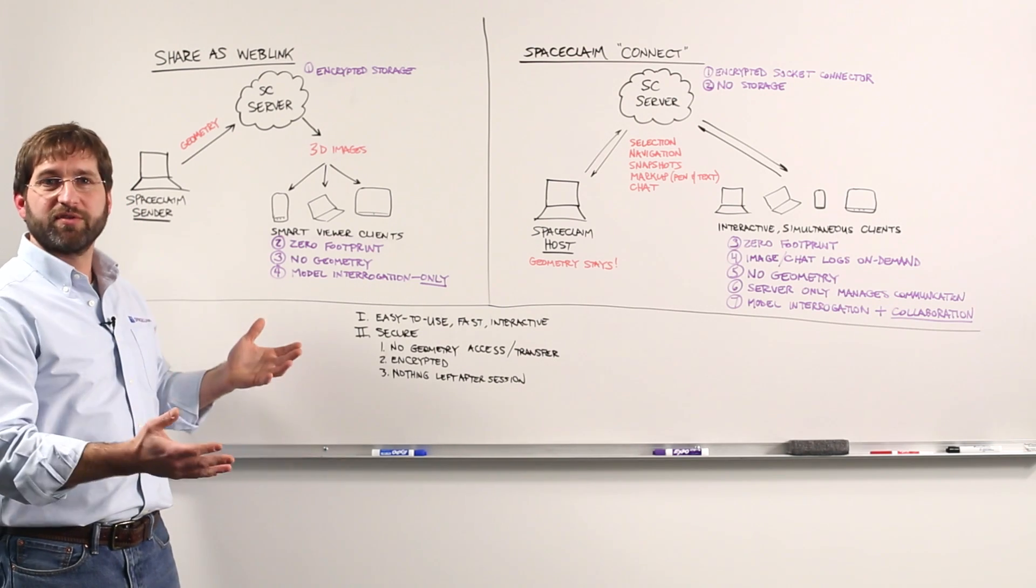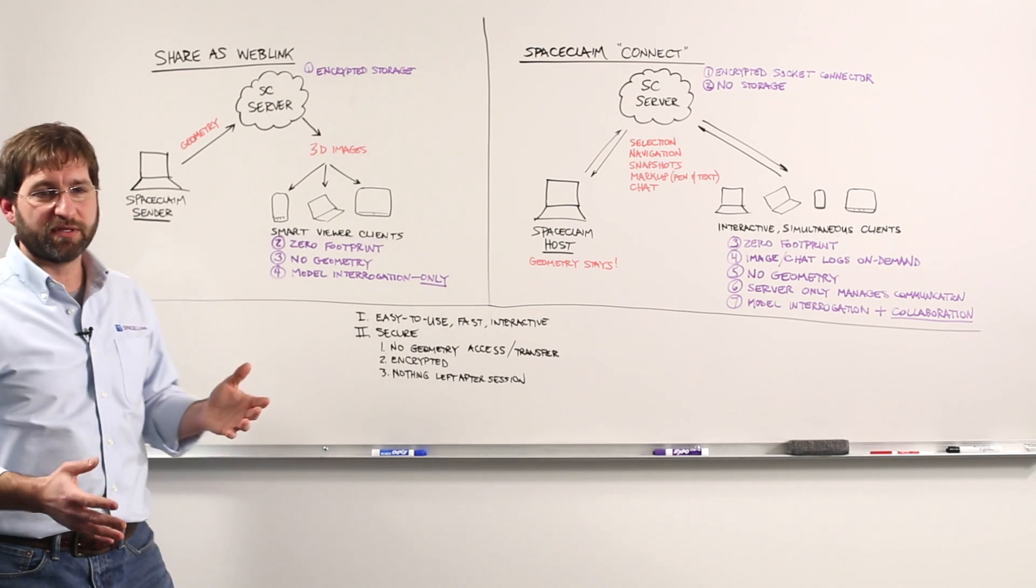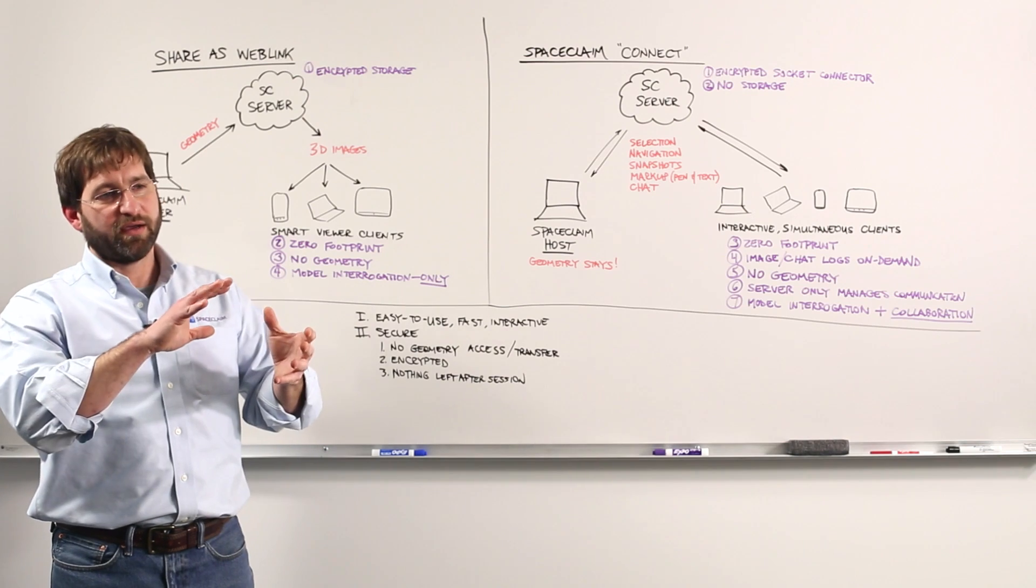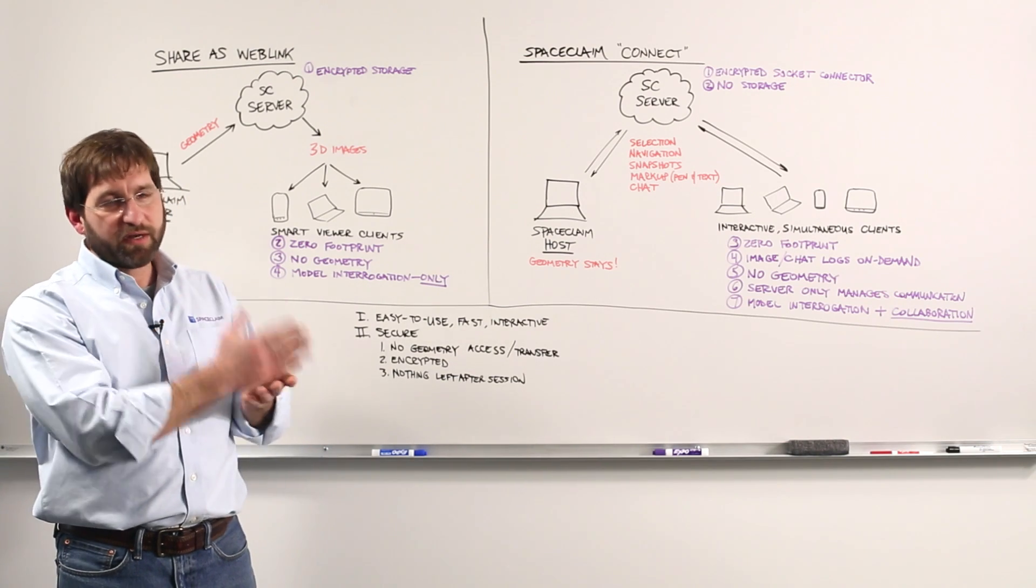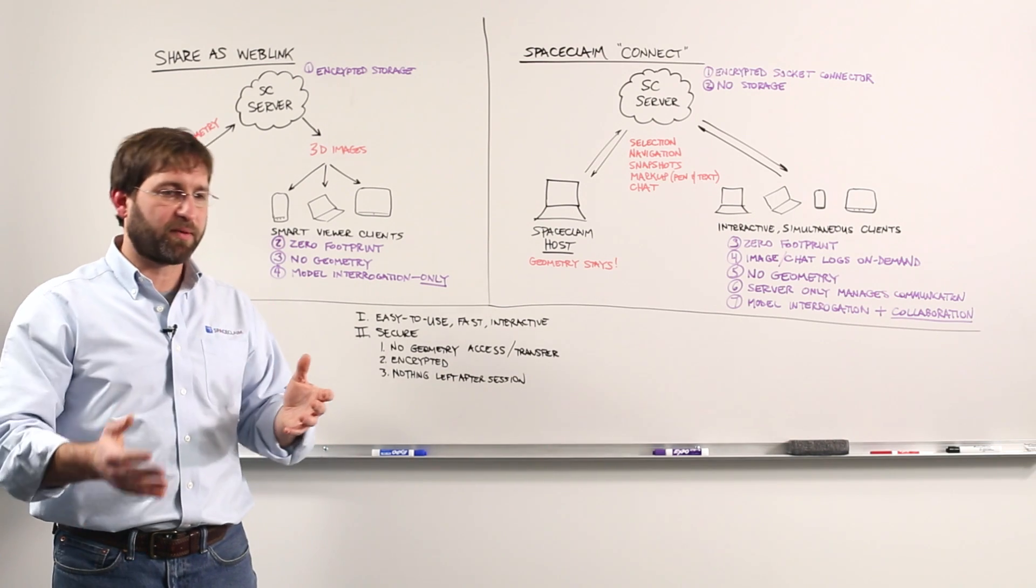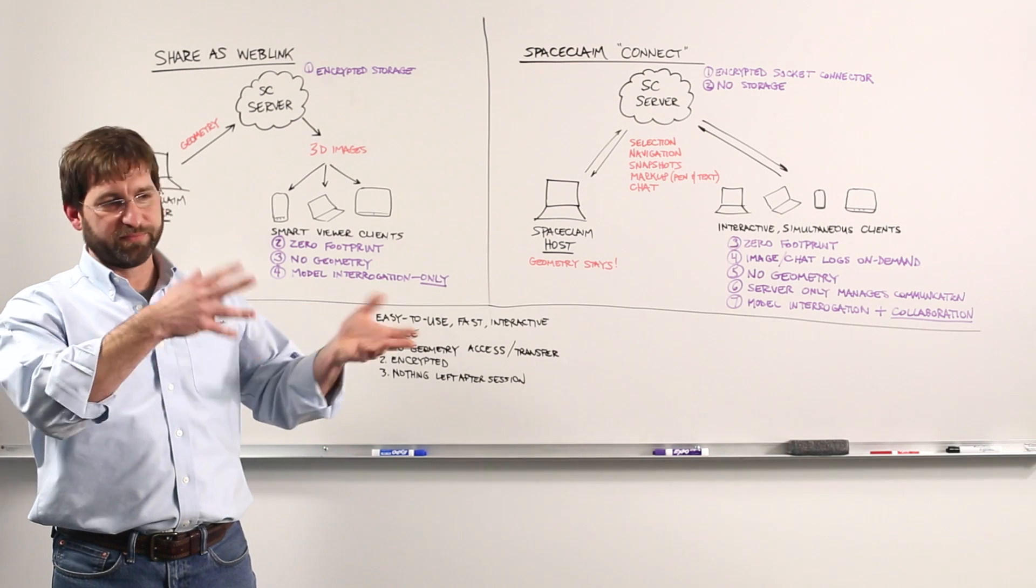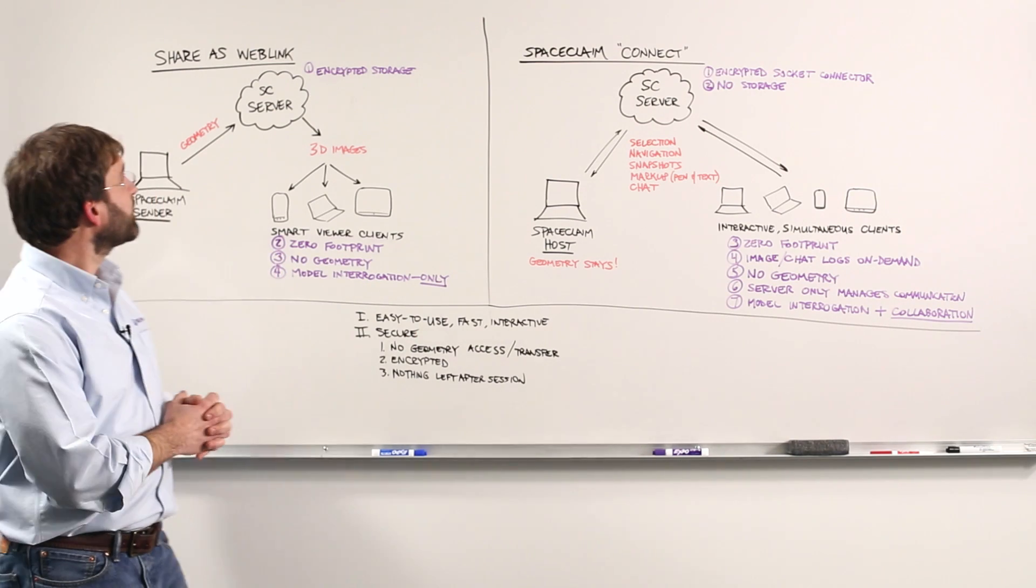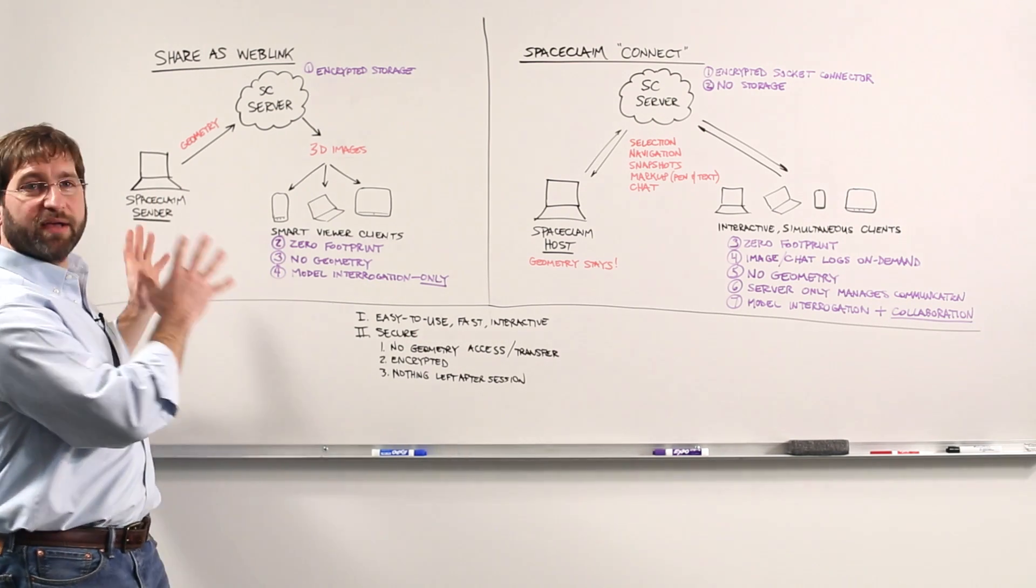there's no geometry ever sent to them, and it allows the clients to do interactive things like cutting cross sections, measuring mass properties, measuring radiuses and things. That's Share as Web Link.